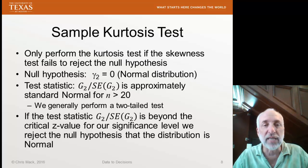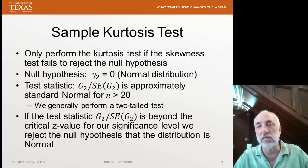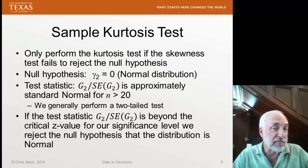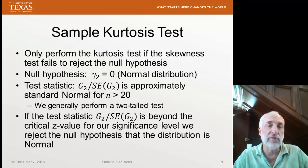Our test statistic is G2 divided by the standard error of G2, and this will be approximately standard normal, as long as we have a reasonable number of data points, say more than 20. We perform a two-tailed test because we don't have any idea whether it's positive excess kurtosis or negative excess kurtosis. Either one of them destroys our assumption of a normal distribution.